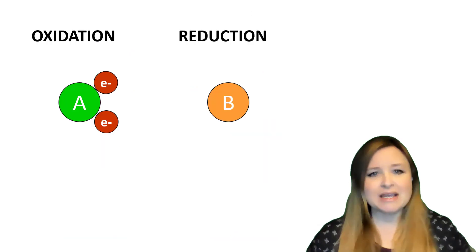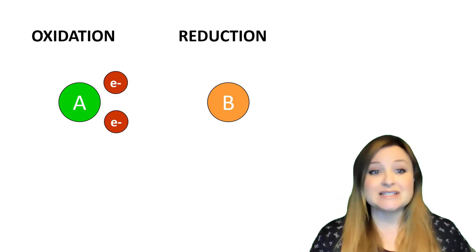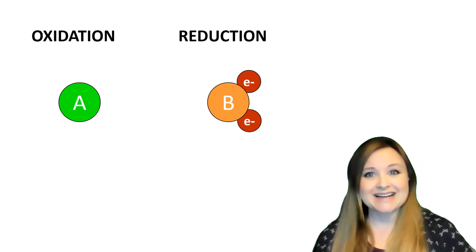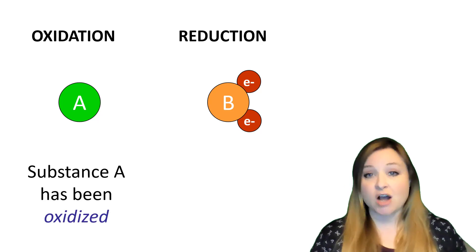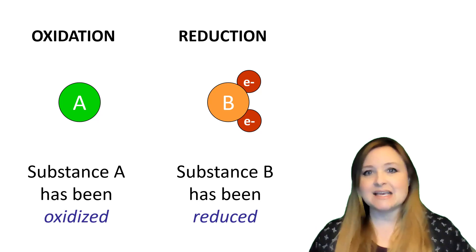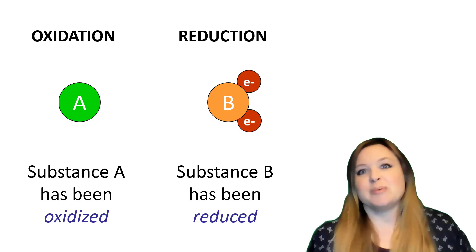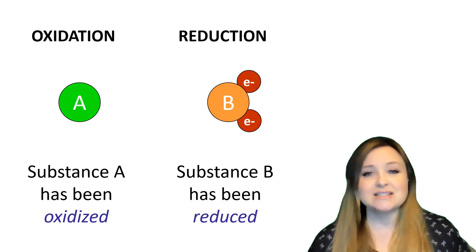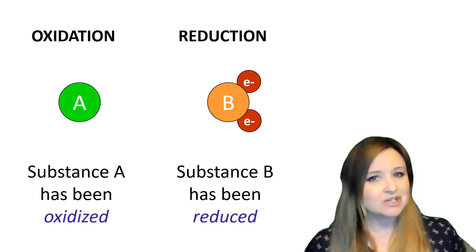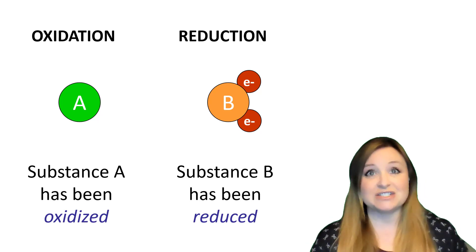Here's another way to look at it: molecule A loses its electrons and molecule B picks up those electrons, so substance A has been oxidized and substance B has been reduced. It's like playing catch — if you toss a ball to somebody, you're losing the ball, you're being oxidized. But somebody else is catching that ball, and when they catch the electrons, they are reduced. So oxidation and reduction are really just about transferring electrons.